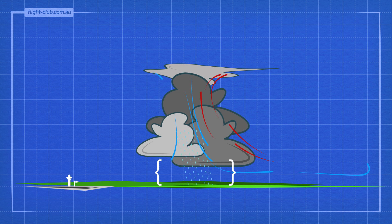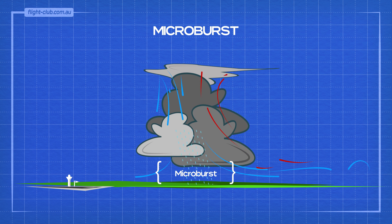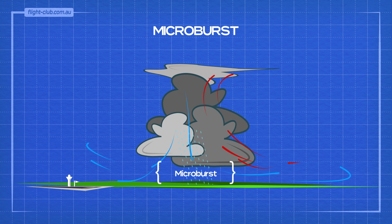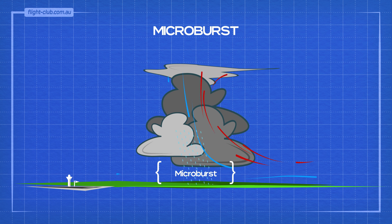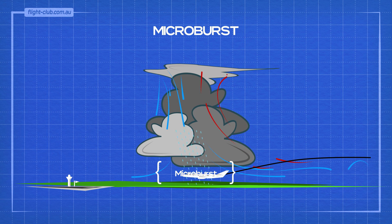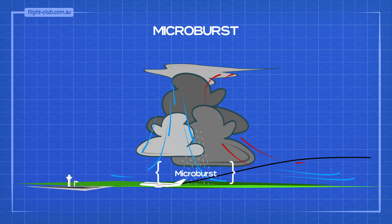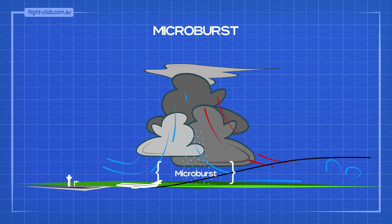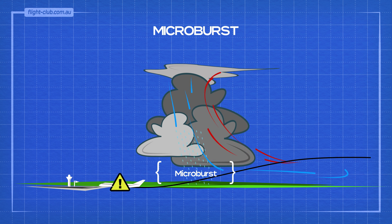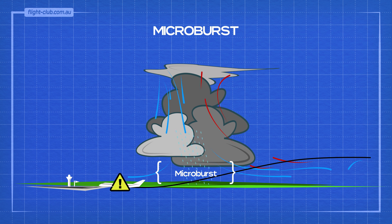A microburst is the most violent form of wind shear produced by the cumulonimbus thunderstorm cloud. A microburst can severely affect the aeroplane's approach path when landing. Microbursts can be wet or dry.